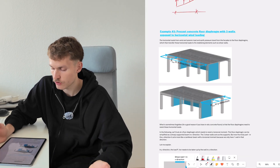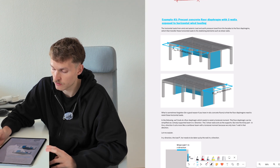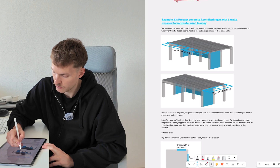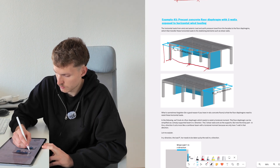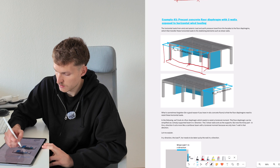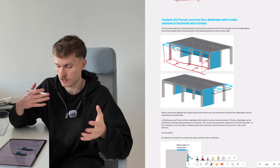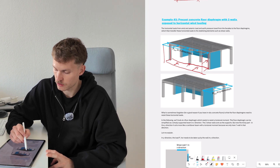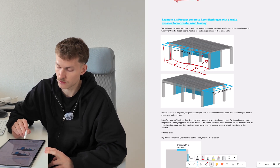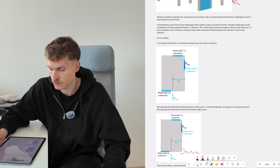Example three: a precast concrete floor diaphragm with three walls exposed to horizontal wind loading. The horizontal loads from wind, seismic load, and earth pressure travel from the facades to the floor diaphragms. We have an area load applied to the whole facade, the facade distributes the wind loads to the slabs, and then these horizontal loads travel through the slab to the shear walls. We look at a floor diaphragm which needs to resist the torsional moment.